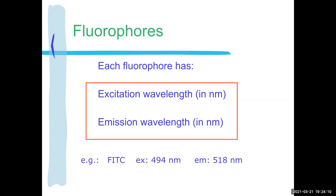When talking about a particular fluorophore, we can define its excitation and its emission wavelengths. For instance, FITC — the first fluorophore used in fluorescence microscopy, and it's still around — has an excitation of 494 nanometers and emission of 518 nanometers. Every fluorophore you're going to use or come across in biology is going to have a defined excitation and emission, unless you're dealing with autofluorescence — but even then you'll figure it out.